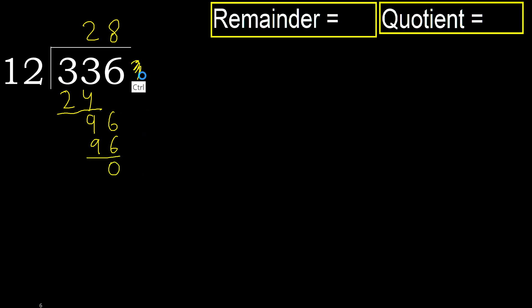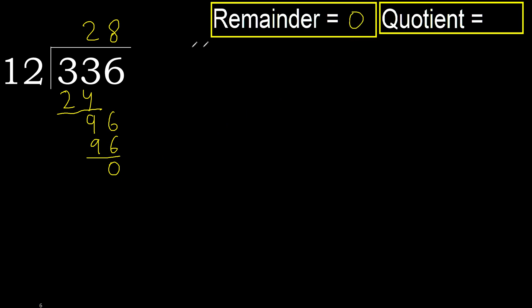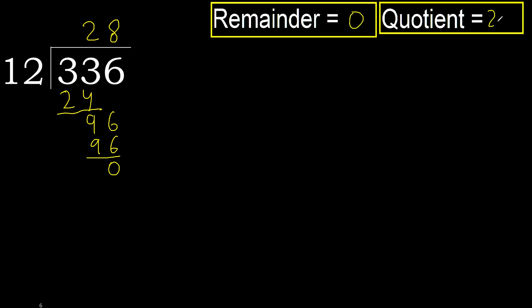There is no next number, therefore we finish. 336 divided by 12 is 28.